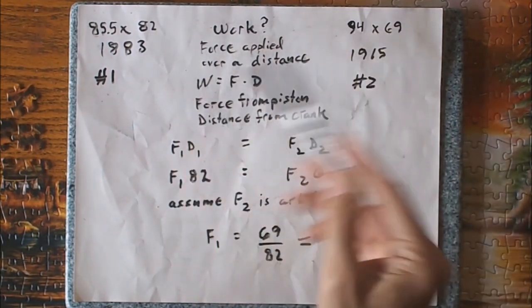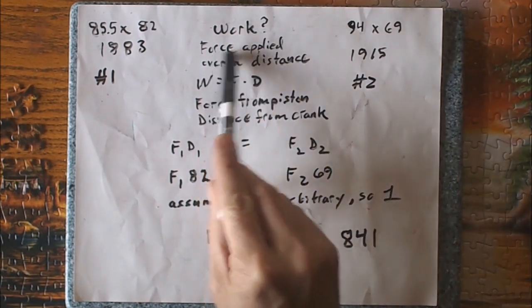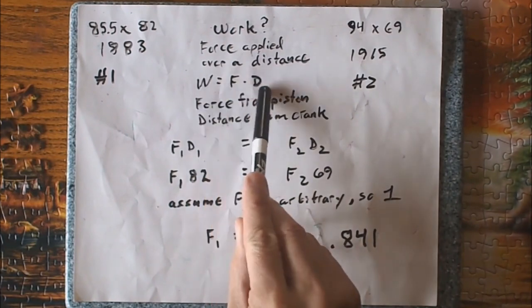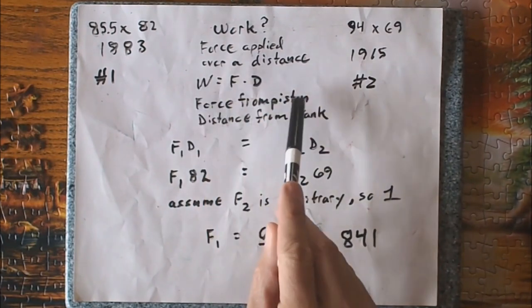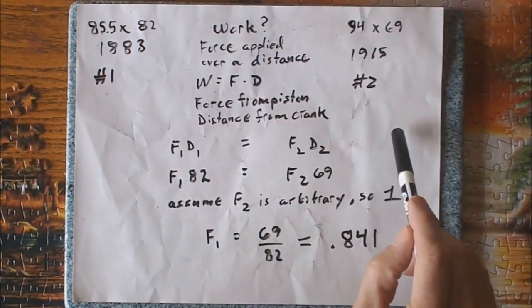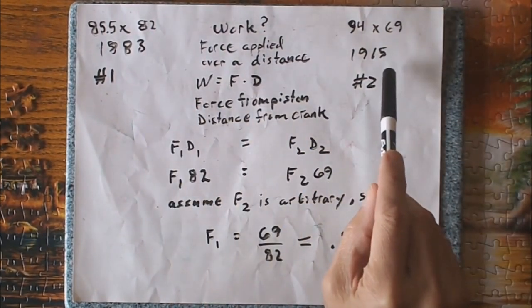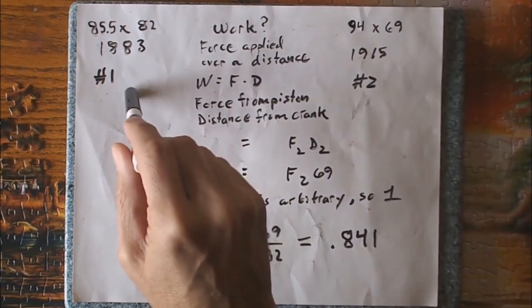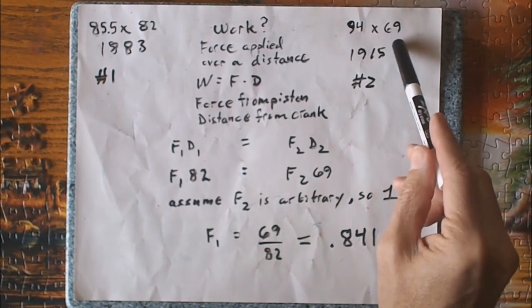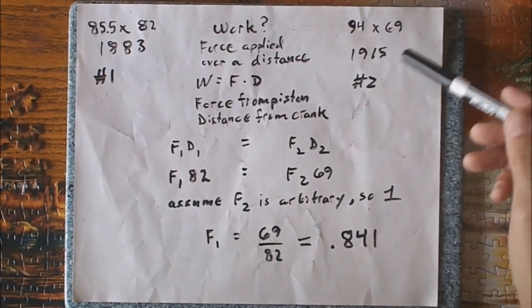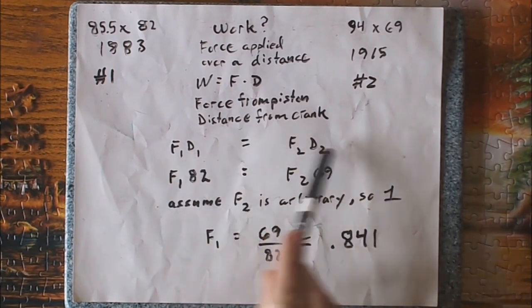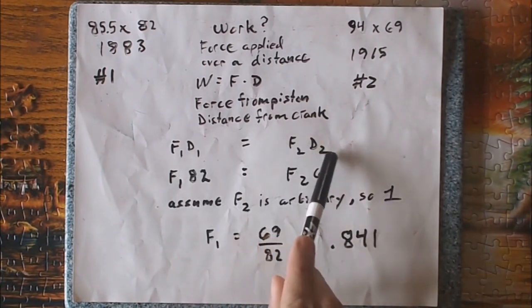What I want to set up is two motors that are roughly similar displacements. This is an 85.5 by 82 for 1883 cc's. And this is a 94 by 69 for 1915 cc's. Since their displacements are pretty close, they're going to be doing about the same amount of work. So what is work? That's just basic physics, a force applied over distance. In a formula, it looks like this: work equals force times distance.